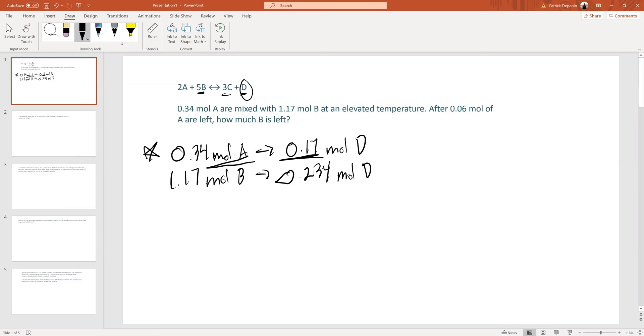Now, if the question is asking after 0.06 moles of A are left, how much B is left? To figure out how much was used out of A, we can take our initial value of A and subtract the amount that is left after the reaction, which is 0.06. This makes 0.28 moles of A.